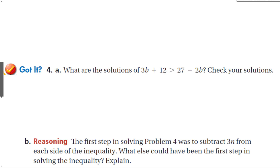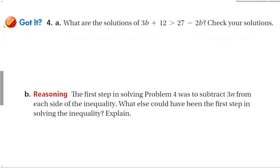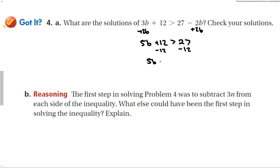Let's look at a guided problem. I see a positive 3 and a negative 2, so let's add 2b to both sides first. That gives 5b plus 12 is greater than 27. Subtracting 12 from both sides gives 5b > 15. Dividing by 5 gives b > 3.